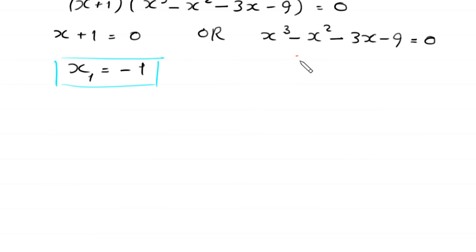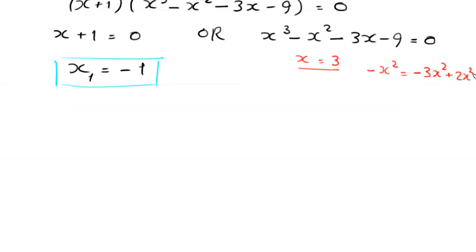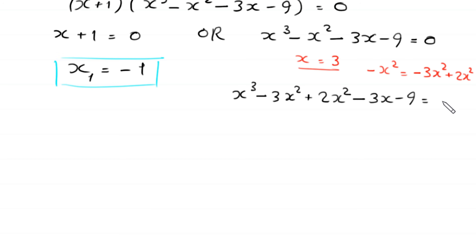We notice that x = 3 is a solution of x³ - x² - 3x - 9 = 0, so we rewrite -x² as -3x² + 2x² to enable factoring. The expression becomes x³ - 3x² + 2x² - 3x - 9 = 0. From x³ - 3x², we factor out x² to get x²(x - 3).